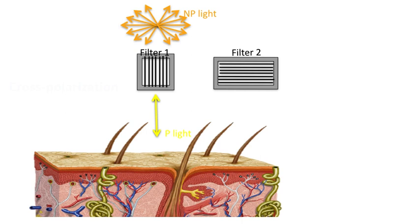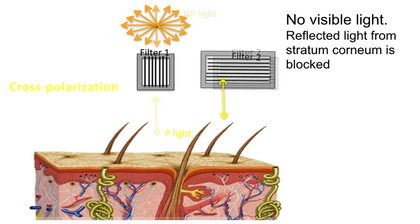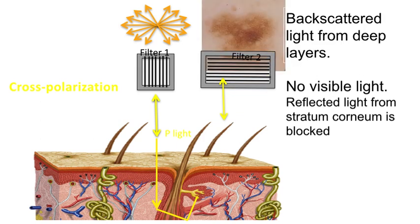Cross-polarization occurs when this polarized light crosses or does not cross the second filter. If the light wave did not change its direction to match the second filter, it will be blocked, and therefore we will not be able to visualize that reflection from the stratum cornea. However, some light waves that cross the first filter will interact with the environment and the skin, going into deeper layers, changing their direction, and being backscattered. These will be able to cross filter two because they changed direction, and therefore we will be able to visualize structures from deeper layers.